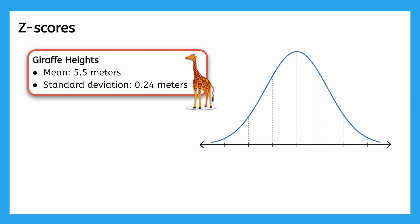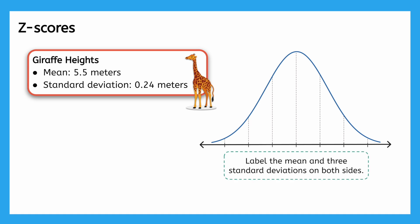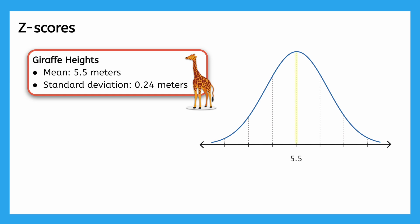Take a moment to sketch this distribution in your guided notes. Label the mean and three standard deviations on both sides. The mean, 5.5 meters, should go in the center of the distribution. Then we can add and subtract the standard deviation to label the rest of the distribution. And look at that — you've already used the concept of z-scores! The value 5.74 is one standard deviation to the right of the mean, therefore it has a z-score of 1.